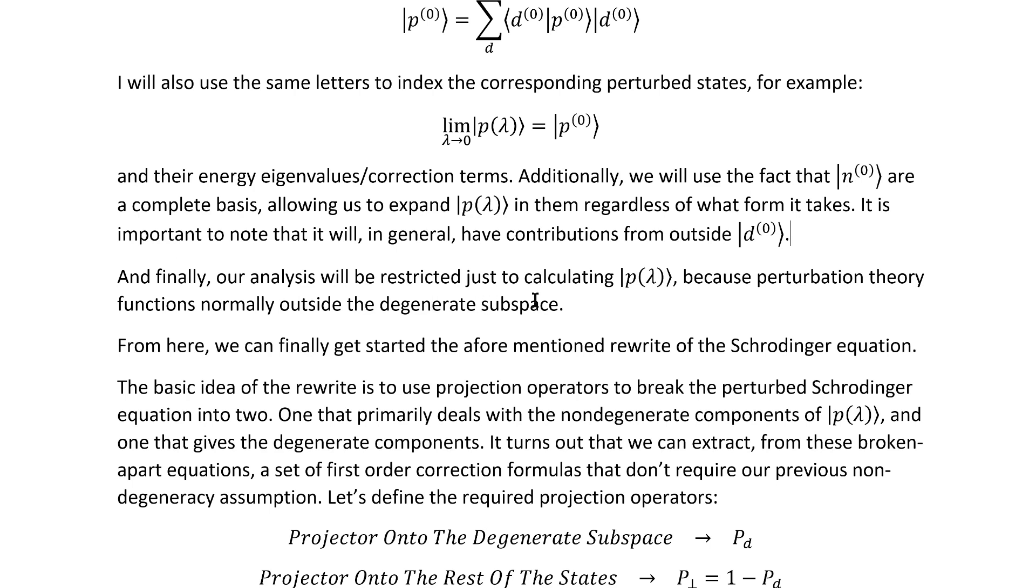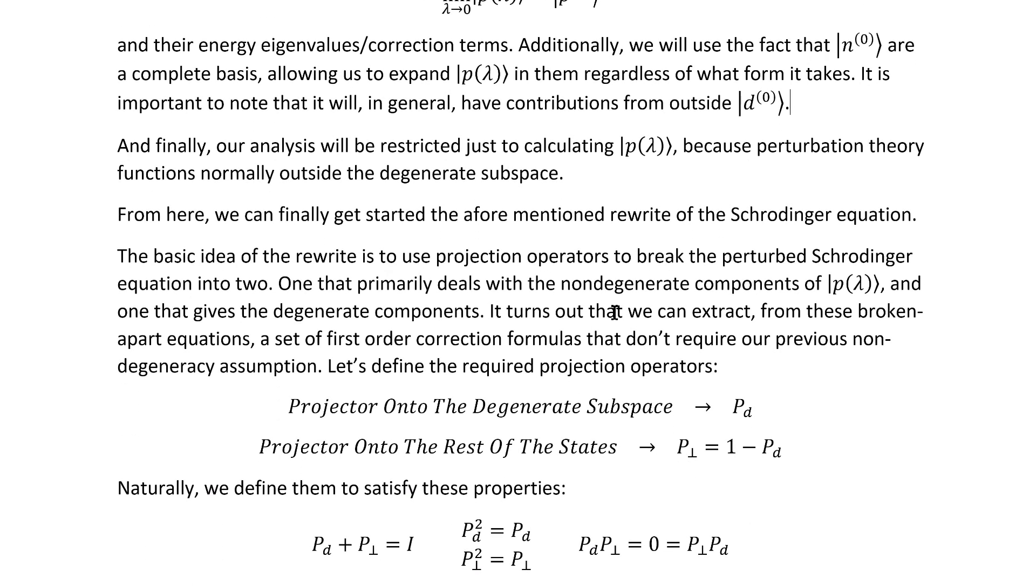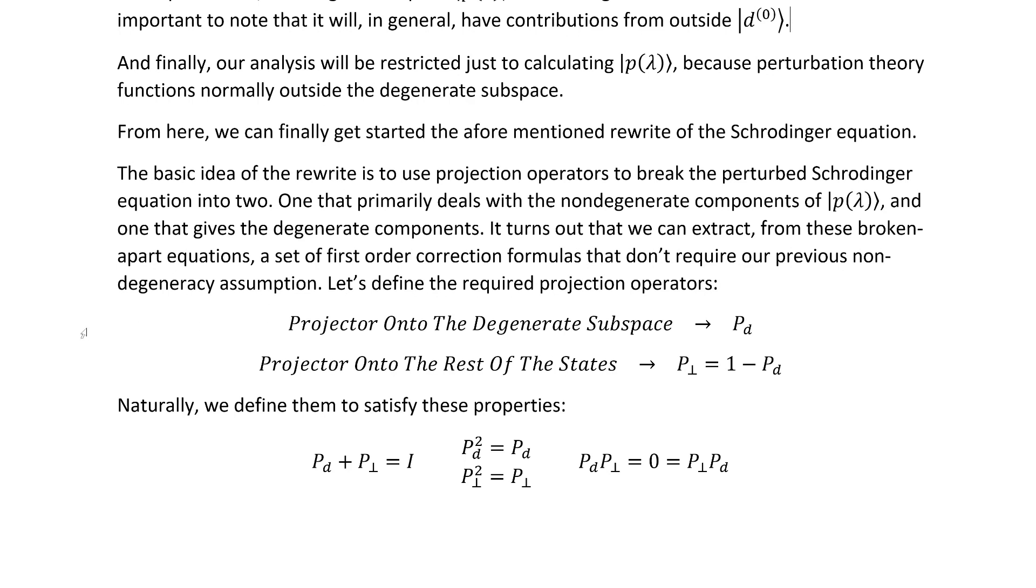And finally, our analysis in this video will be restricted to just calculating the perturbed states and energy eigenvalues associated with them within the degenerate subset because perturbation theory functions normally outside the degenerate subspace. From here, we can finally get started with the aforementioned rewrite of the Schrödinger equation. The basic idea of the rewrite is to use projection operators to break the perturbed Schrödinger equation into two, one that primarily deals with the non-degenerate component of this perturbation, so the states that contribute to it outside of this D-naught subset, and another one that gives us the degenerate components. It turns out that we can extract from these broken apart equations a set of first-order correction formulas that don't require our previous non-degeneracy assumption.